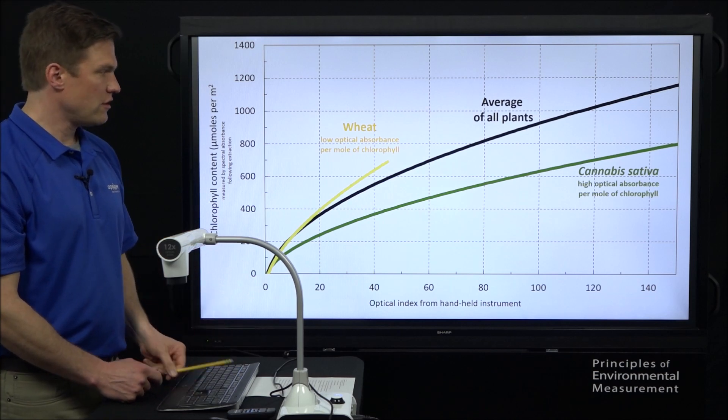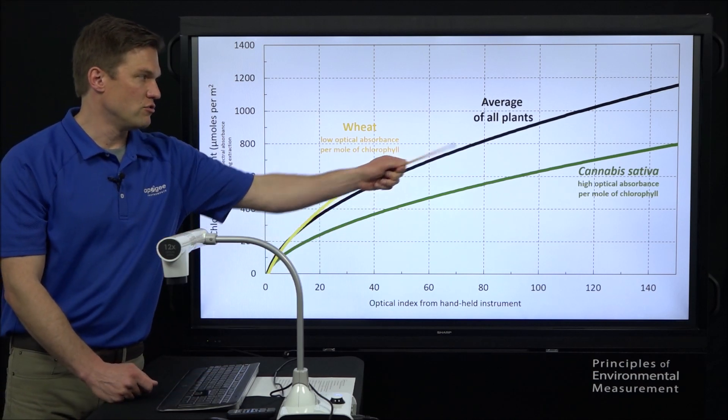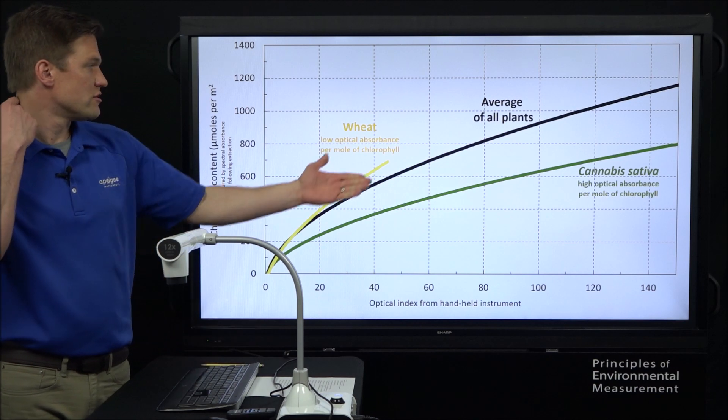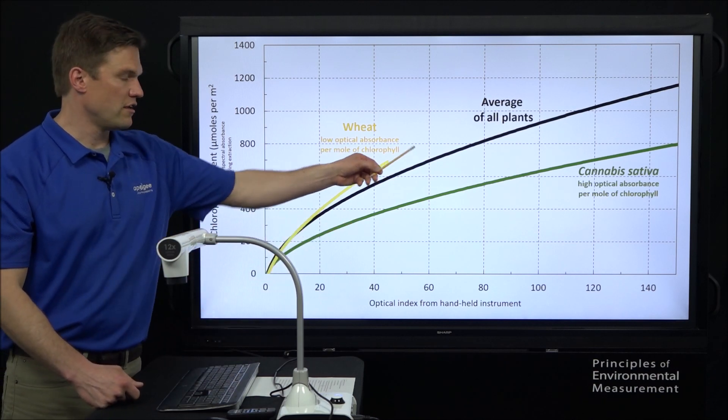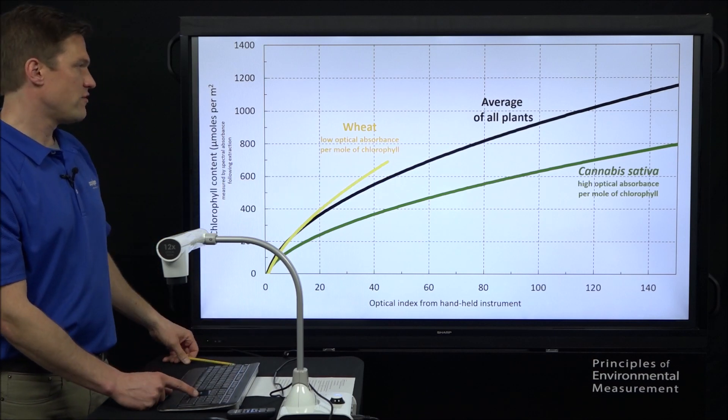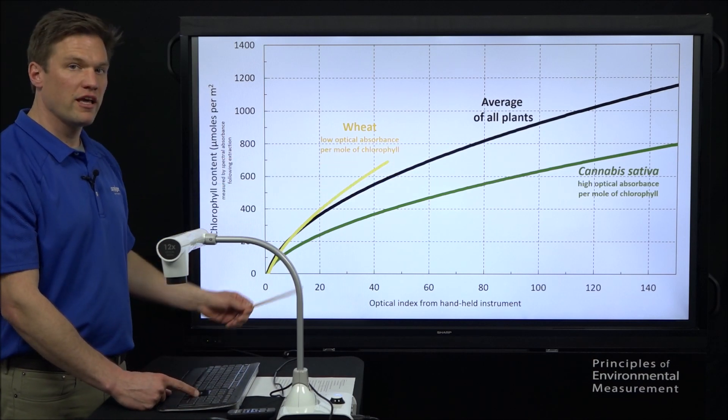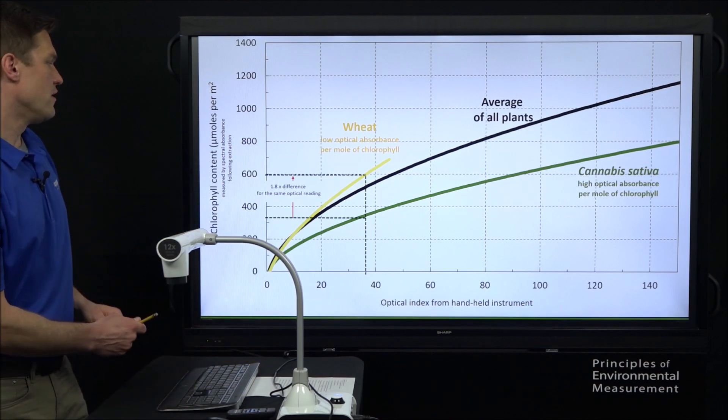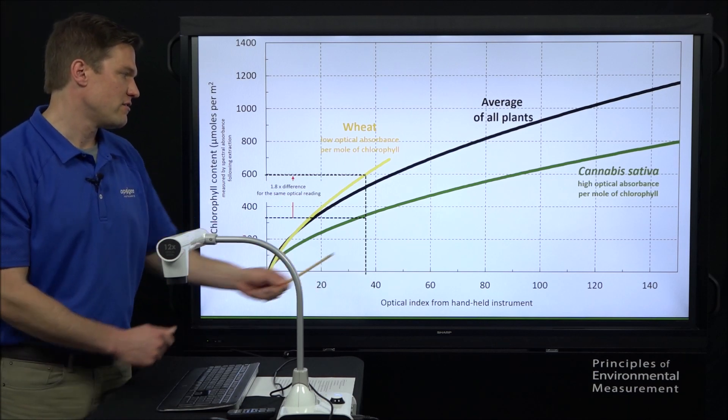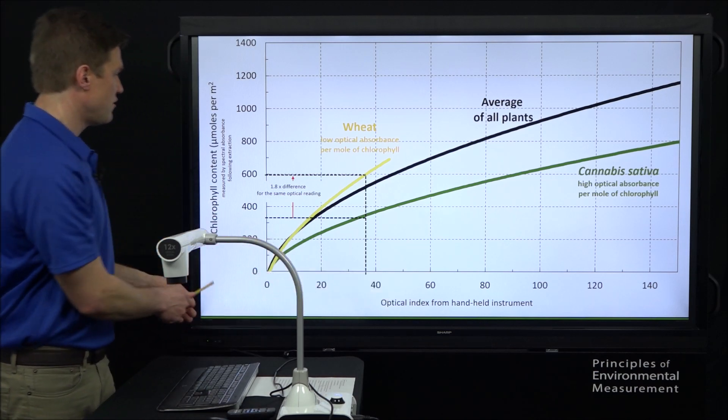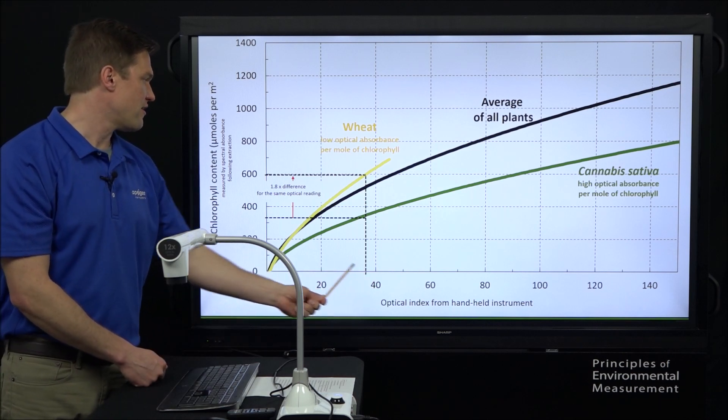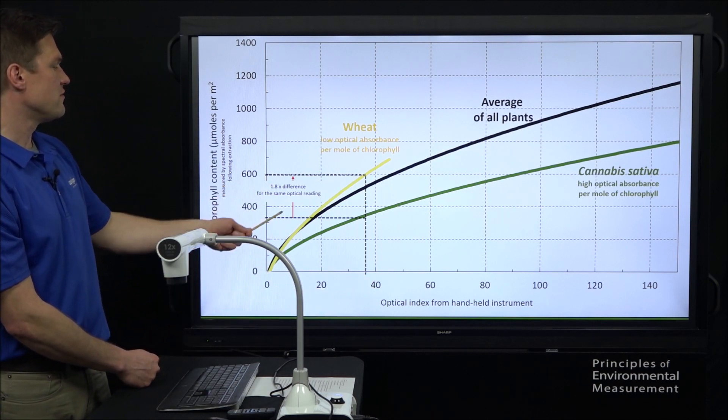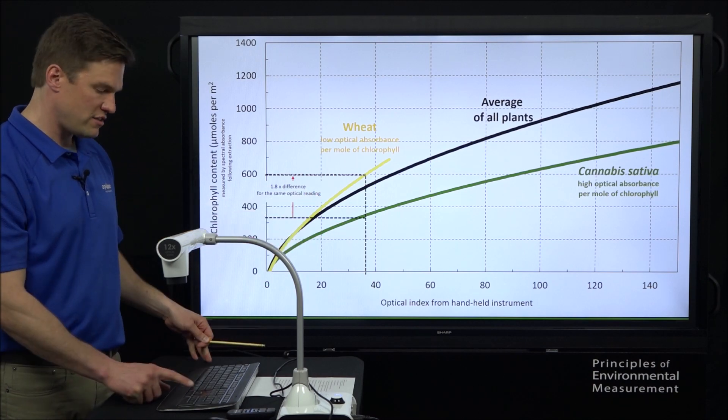Now, this video is inspired by our new cannabis coefficients as well as grape coefficients. Here's a look at the new cannabis coefficients in green compared to wheat and the general set of coefficients. You can see that cannabis has a different shape to it. For the same CCI value, CCI value is on the x-axis down here and absolute chlorophyll on the y-axis. So for the same CCI value, it's almost a two times difference, 1.8 times difference between cannabis and wheat.